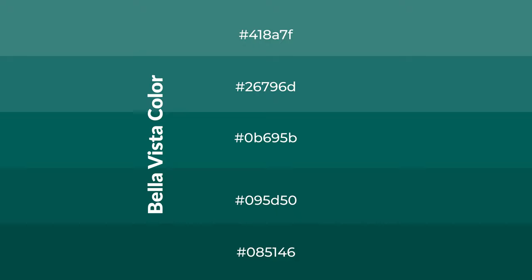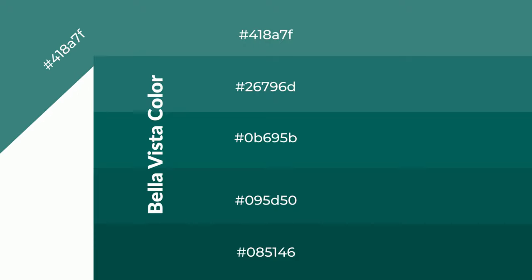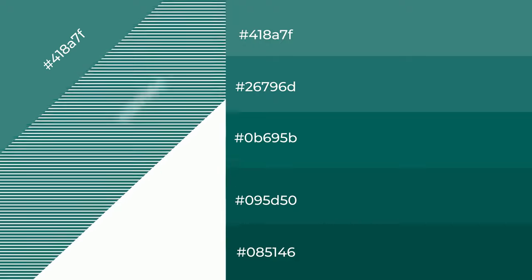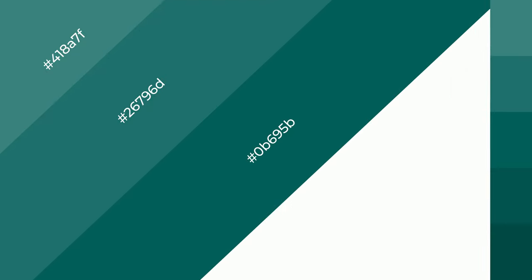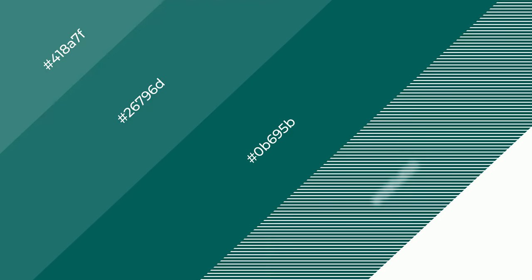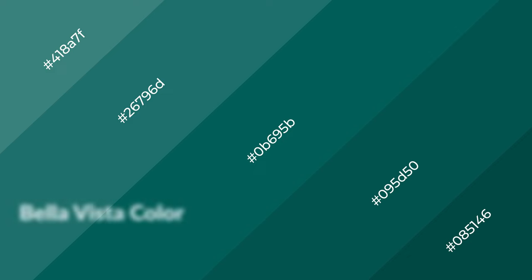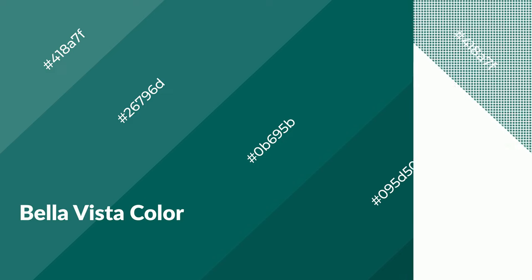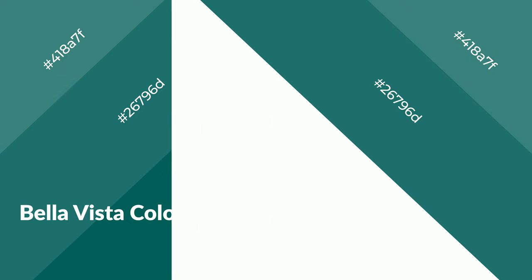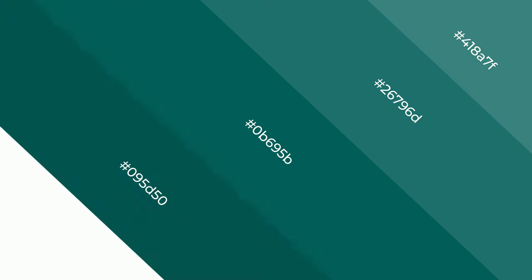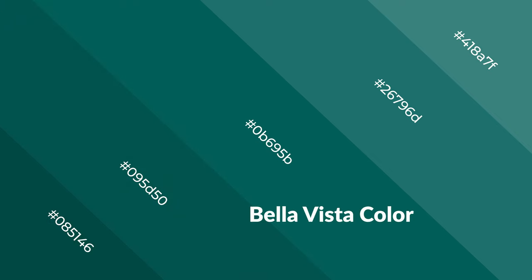To generate shades of a color, we add black to the color. Shades are used in patterns, 3D effects, and layers, and they create depth and drama. Bella Vista is a cool color and it emits calming, serene, soothing, refreshing, spacious, unwinding, peaceful, and relaxed emotions.